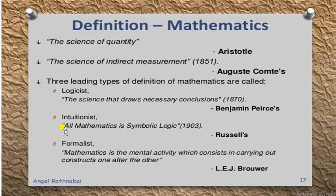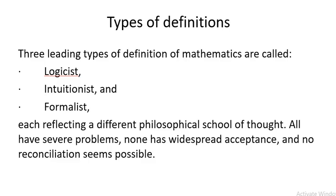We will further discuss three different perspectives of defining mathematics: the logicist, intuitionist, and formalist points of view. These three different perspectives will be detailed one by one. All three reflect a different philosophical school of thought and are quite different from each other. All have their problems, none has widespread acceptance, and no reconciliation between them seems possible.